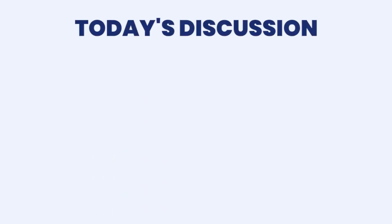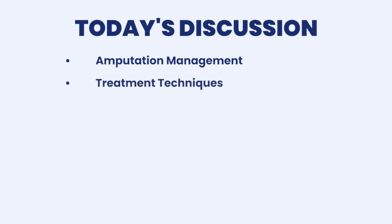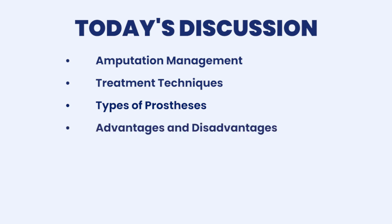For this video, we are really going to be looking at amputation management, especially the pre-prosthetic phase, the treatment techniques, and the types of prosthesis. When it comes to upper extremities, we'll cover advantages and disadvantages of different types of prosthesis such as body-powered prosthetics, myoelectrical prosthetics, as well as lower limb prosthetics.